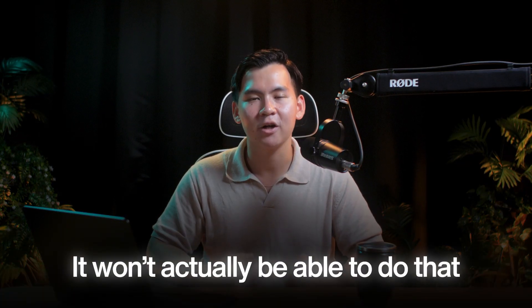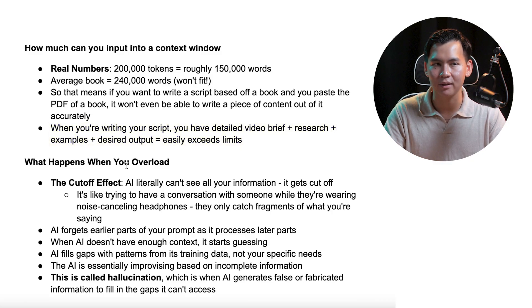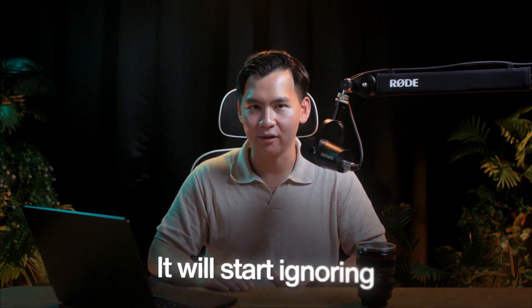150,000 words is pretty much less than a book. So if you want to give ChatGPT a book and ask it to write a script based on it — like a book summary — it won't actually be able to do that because it can't process all the information in one shot; its context window is too small. When you'd write a script, you'd typically give it some context, some research, and ask it to output everything at once — maybe multiple emails or a full 3,000 to 5,000 word script in one prompt. It simply does not have the context window to fit all of that information. Literally anything outside the context window that you feed into the LLM, it will start ignoring.